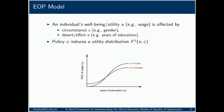The idea at the heart of equality of opportunity is to emphasize the importance of factors for which people can be held accountable, and minimize the impact of circumstances and arbitrary factors — those for which people cannot be held responsible. Economists have proposed several models for EOP. At a high level, these models assume that an individual's outcome is affected by two main factors: circumstance C and effort E.